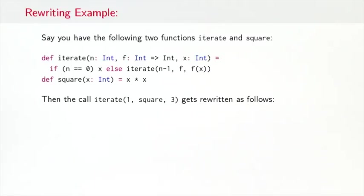Let's see that in action in an example. Say you have two functions, iterate and square. Iterate would apply the given function f n times on the given argument x. Square is just a squaring function that takes an argument and multiplies it by itself. Let's now look at the call iterate of 1, square, and 3. The first thing you do is you take the right-hand side of iterate and you replace the actual arguments for the formal parameters n, f, and x. So that would give you this line here.